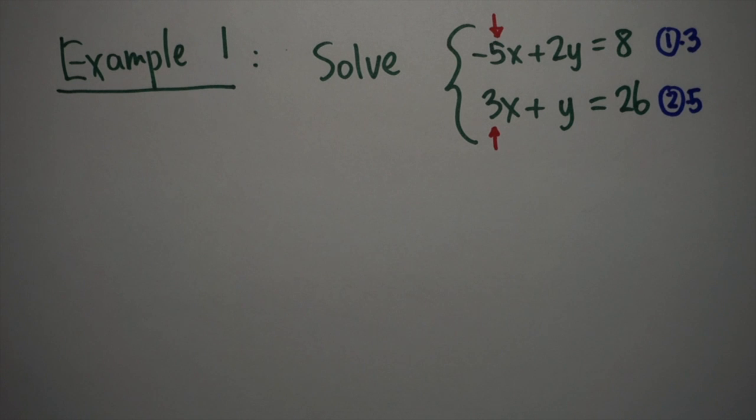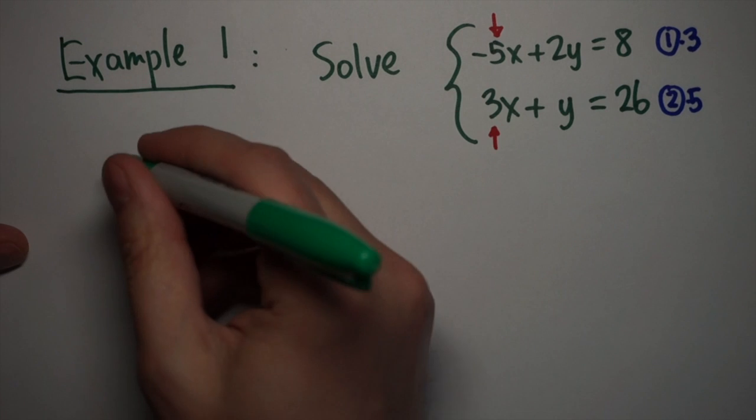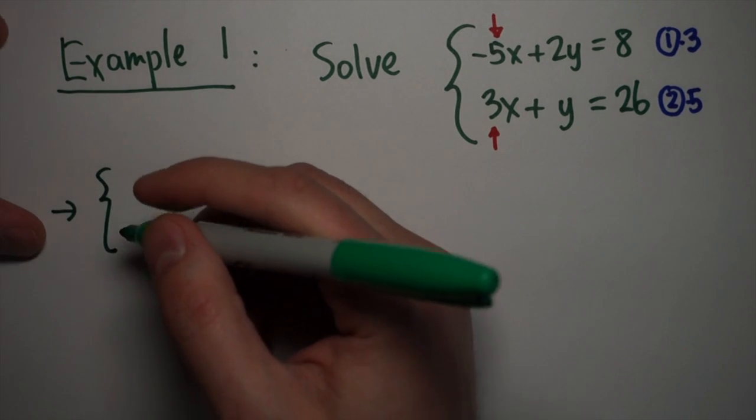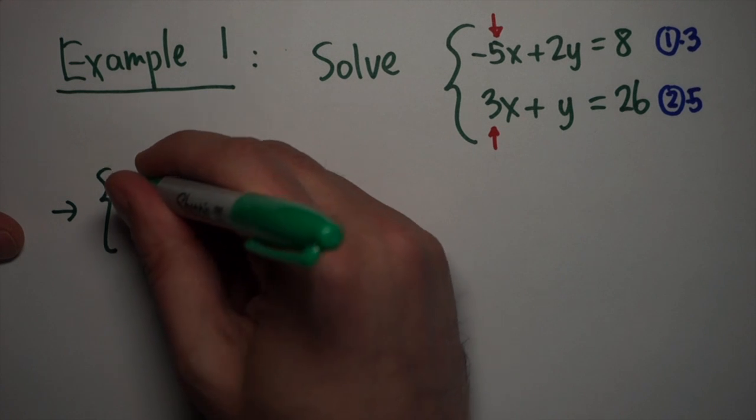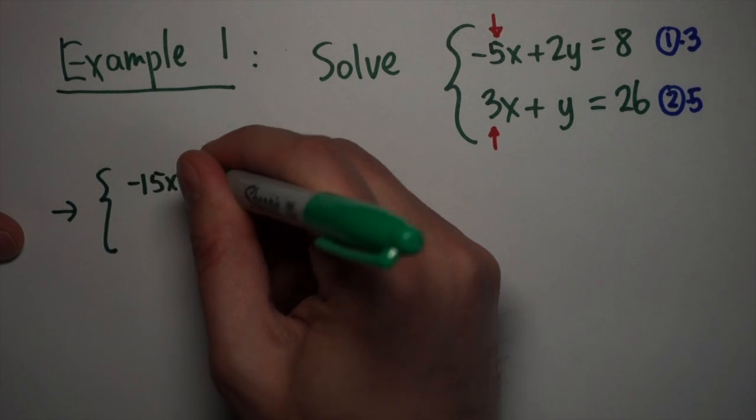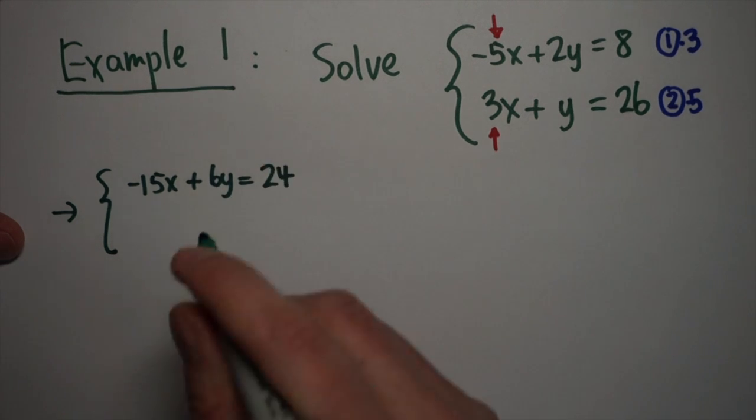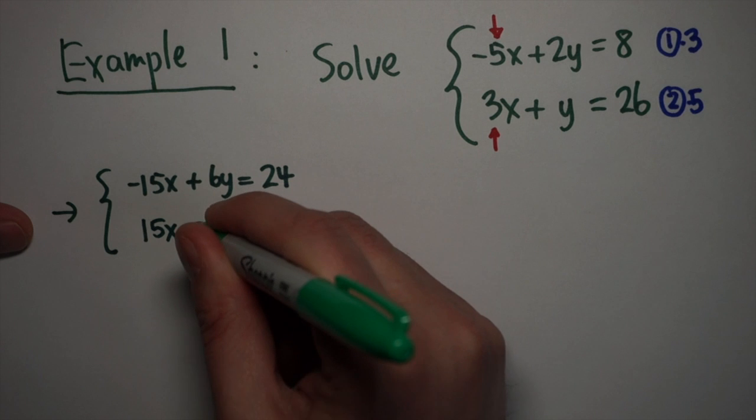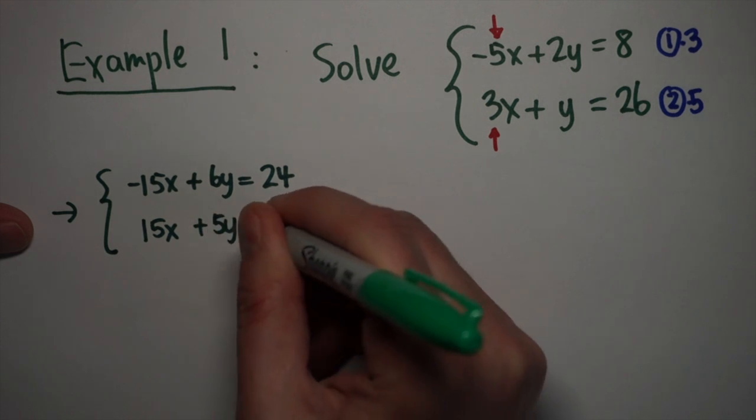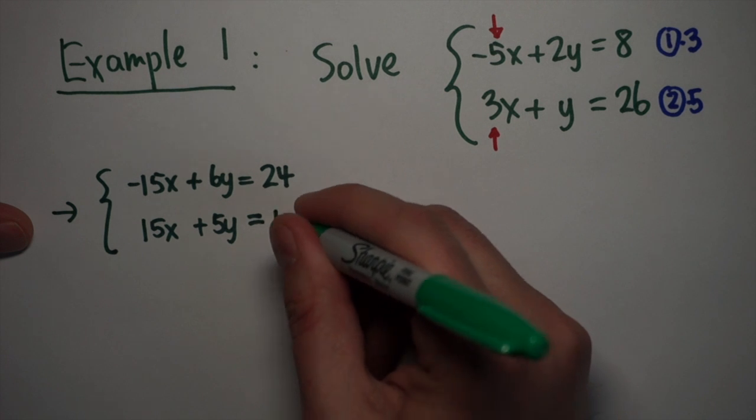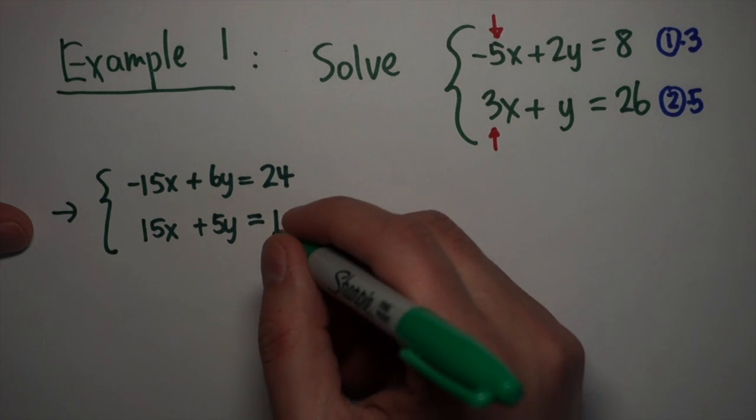When I do this, my two coefficients of my x variables will be nice and easy to eliminate each other. So what I get is negative 15x plus 6y is equal to 24. And when you multiply by 5, 15x plus 5y is equal to 130.